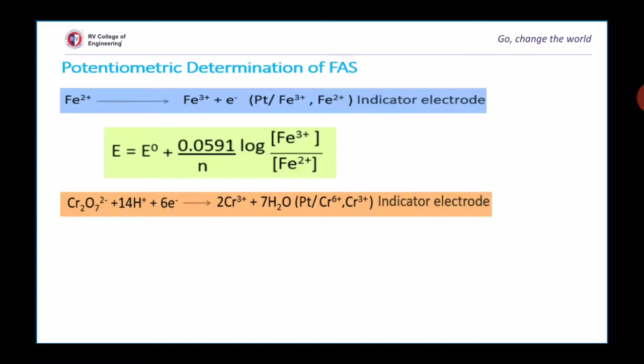Gradually, change in the potential also occurs. Near the endpoint, there is an abrupt change in the value. This is mainly due to change of electrode behavior from iron to chromium, which is represented as shown in the figure.